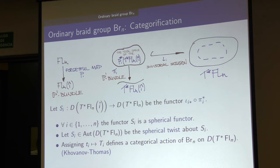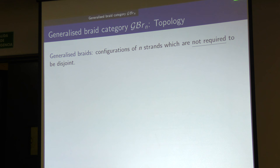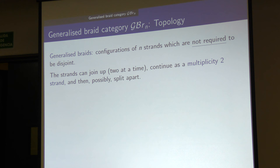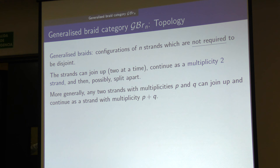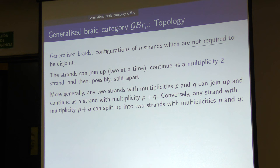In order to describe what acts there instead of tangle calculus, we arrive at the following definition. We describe the generalized braid category topologically. Generalized braids are configurations of N strands which are still not allowed to look back, but we no longer require that they are disjoined — we allow them to overlap. However, we allow them to overlap in a very controlled way. Strands can join two at a time, continue as a multiplicity-two strand, and then possibly split apart. More generally, any two strands with multiplicities P and Q can join up and continue as a strand with multiplicity P+Q, and then possibly split. Any strand with higher multiplicity can split into two strands with lower multiplicity. It is important that we only allow strands to join or split up two at a time, at most.